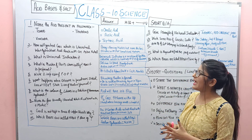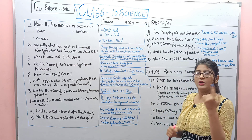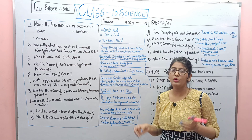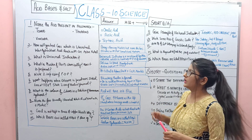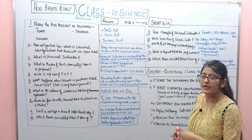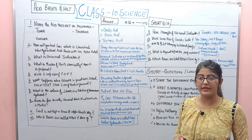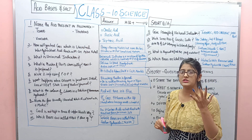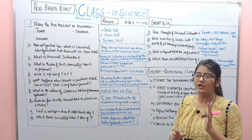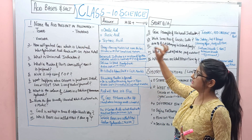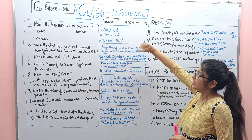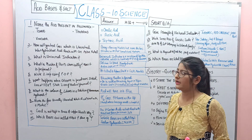The first question is: name the acid present in the following food items. The first is tomato — oxalic acid. Second is vinegar — acetic acid. Third is tamarind — tartaric acid. You can also add apple or orange. In MCQ format, you will be given options like oxalic, acetic, and tartaric, and you need to identify the correct acid for each food item.